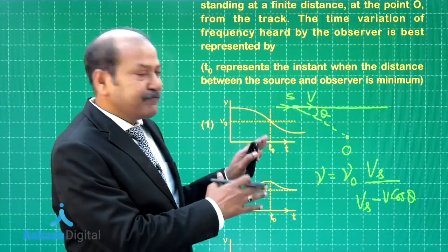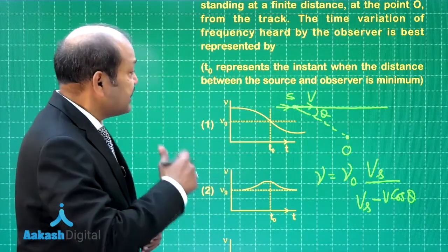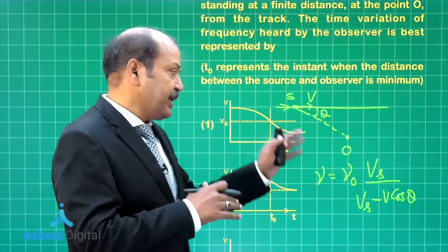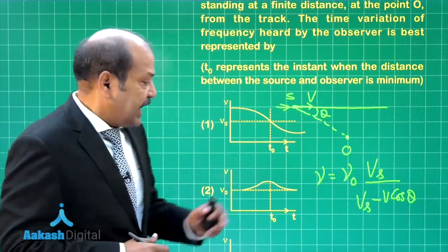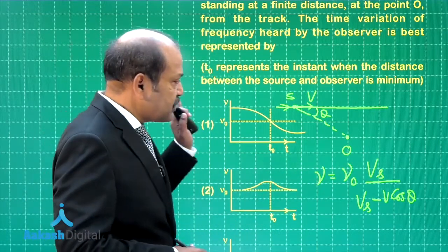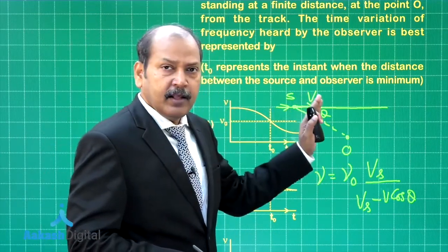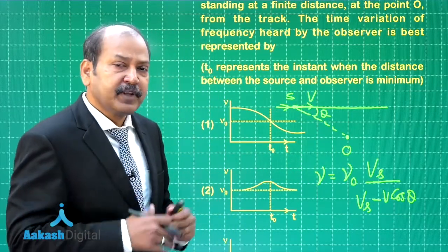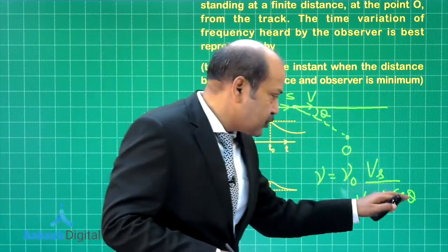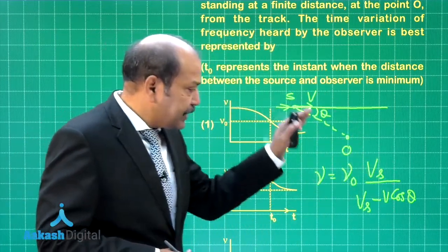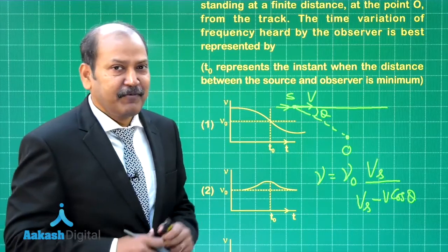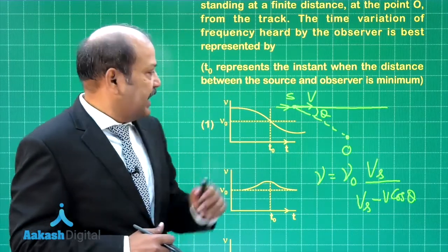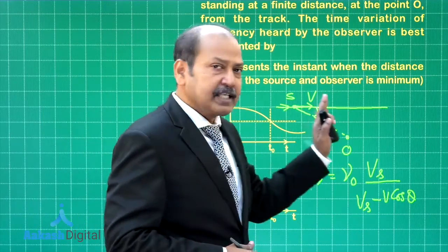This expression is valid for the frequency heard till time less than T naught. Till that time we can take this to be valid and we can see here that as the source is approaching the observer along this straight track the angle theta goes on increasing, cos theta goes on decreasing, and the frequency continuously increases very important. The frequency is continuously increasing as the source is approaching the observer along this line.